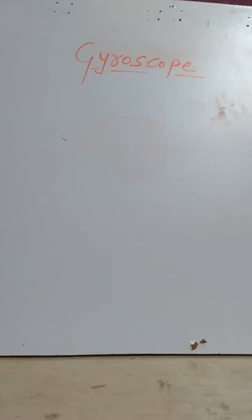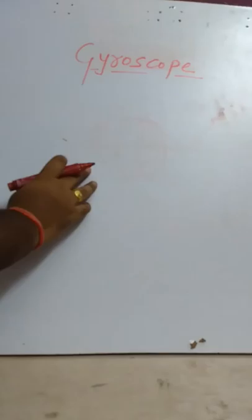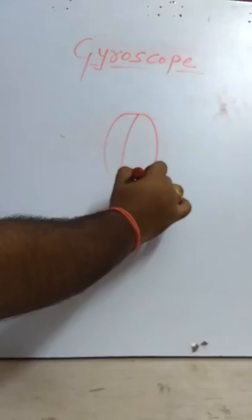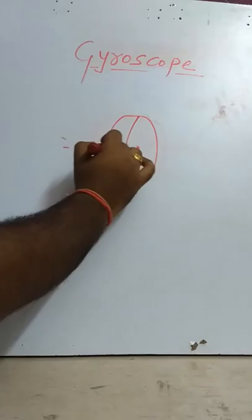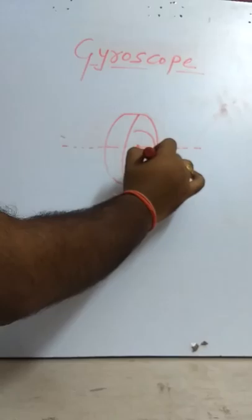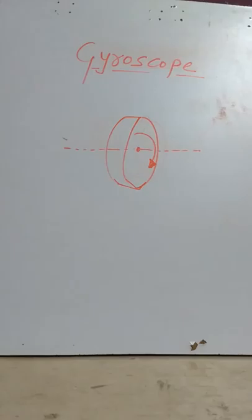To understand the gyroscopic effect, let us consider one disc rotating in a plane. This disc is rotating inside the plane, and it is called the axis of spin. We are providing some direction to the disc, and while rotation we will provide some angular velocity to the disc.